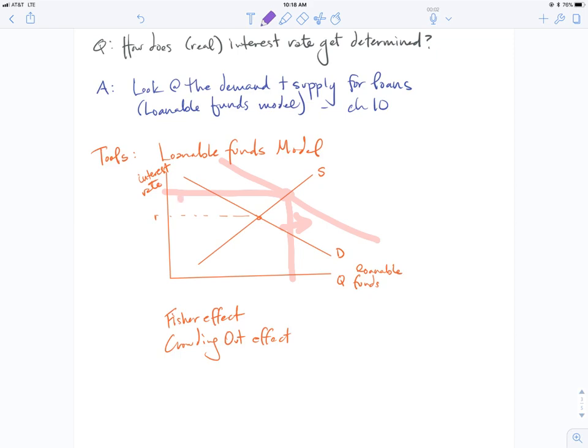Then there's the Fisher effect, which is talking about how real interest rates are unchanged with inflation. As long as inflation is reflected and people are allowed to adjust in time, there will be no real impact on interest rates, at least real interest rates, because everybody just adjusts upward.